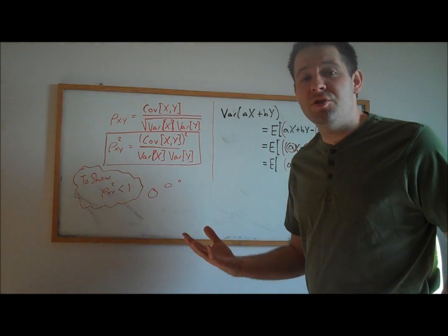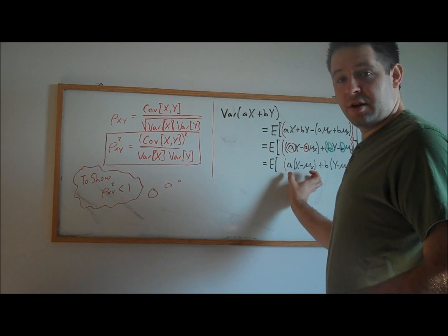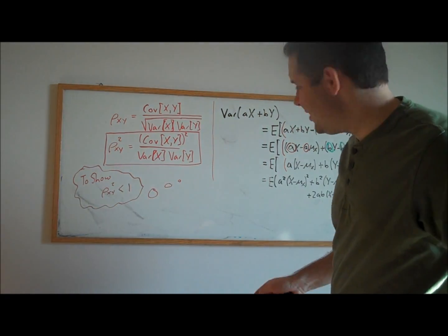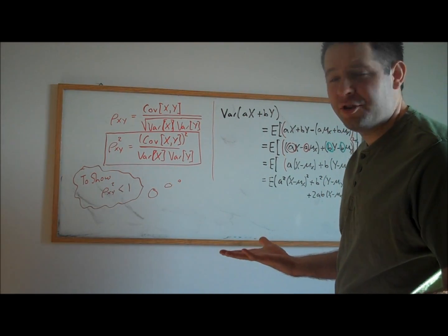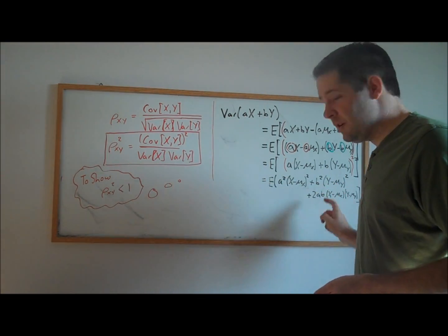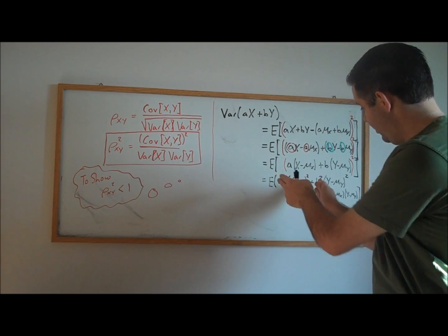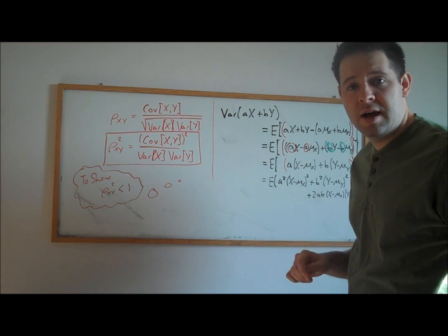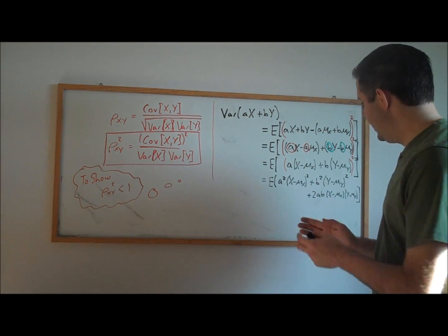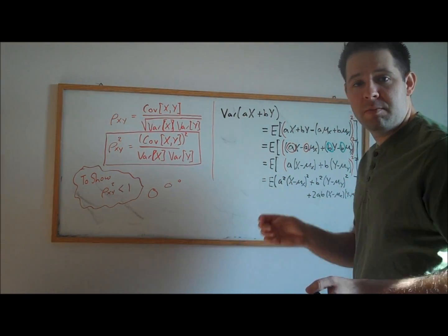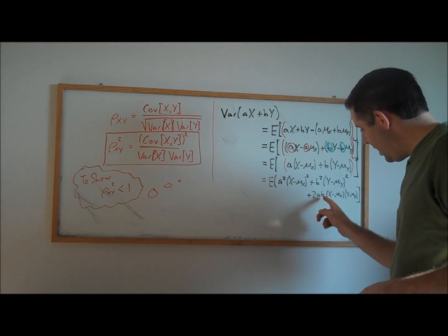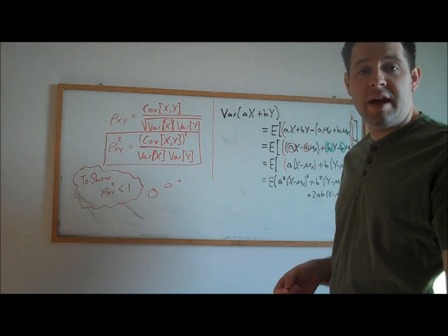Okay, so the next thing that we'll do is we'll multiply this out. We'll square this term, we'll square this term, and then we'll have two cross terms. And now, as you can see, this is just going to be a linear combination of random variables. We can bring the constant terms up front of each of these terms, or we can break the expectation into three different expectations. And what we'll end up seeing is this first term is going to be a squared times the variance of x. This second term is going to be b squared times the variance of y. And this third term is going to be 2ab times the covariance of x with y.